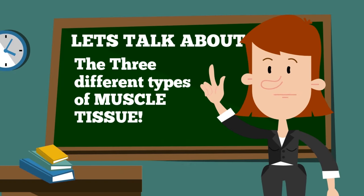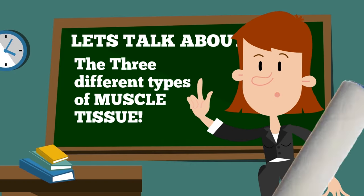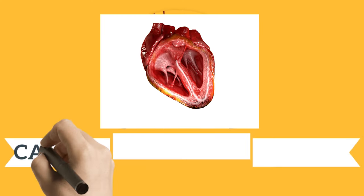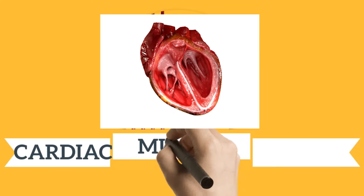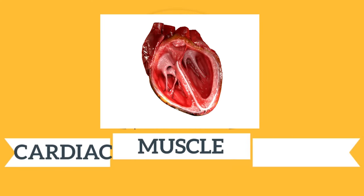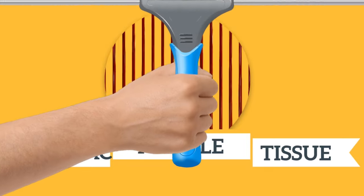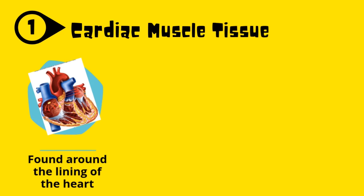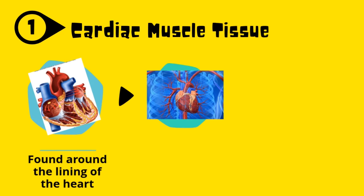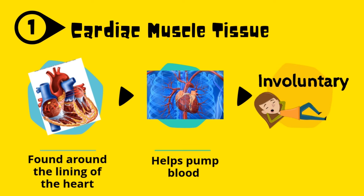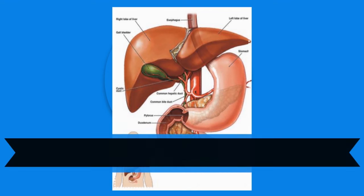The first thing we're going to talk about is the different types of muscle tissue. There are three different types of muscle tissue. The first muscle tissue is cardiac muscle tissue. Cardiac muscle tissue is found around the lining of the heart. It helps pump the blood, and it is involuntary, which means you have no control over it.